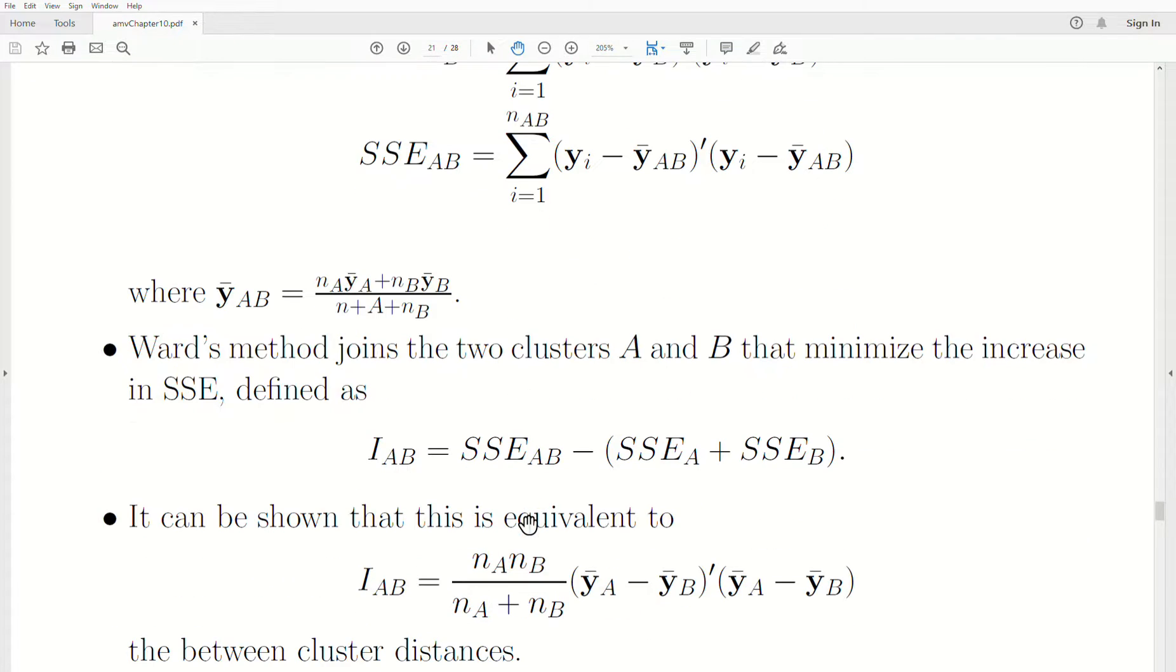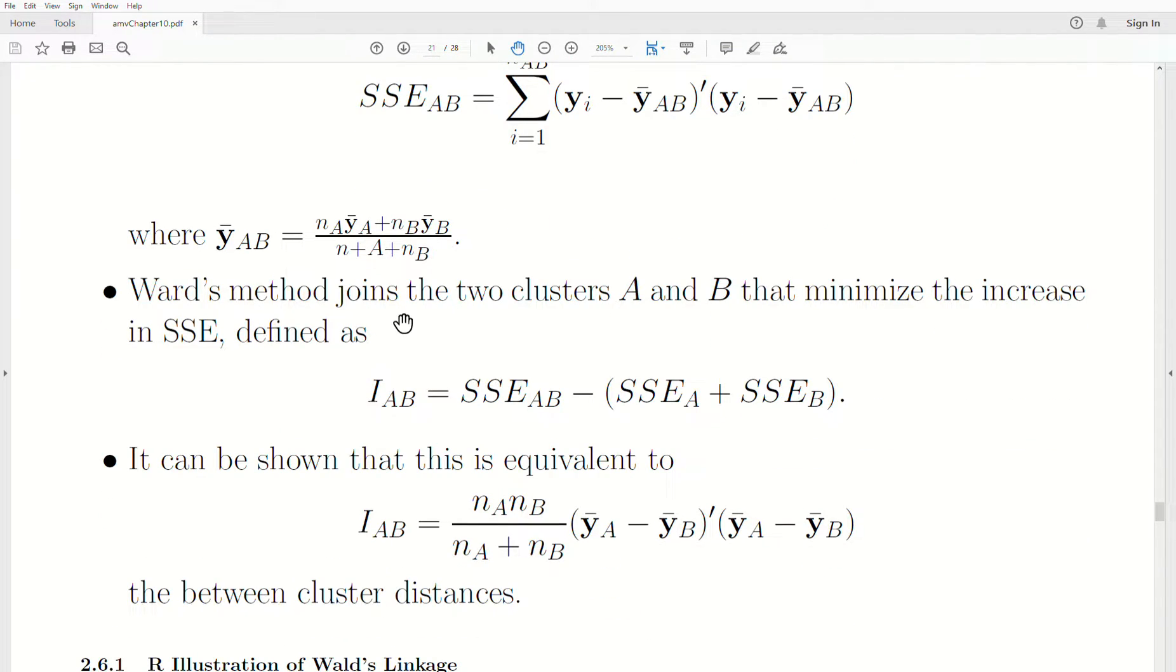Ward's method joins two clusters A and B that minimizes the increase in the sum of squares within cluster distances. So cluster A and cluster B each have their own little sum of squares within.